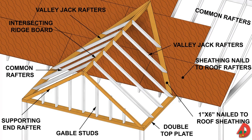Blind valley construction is a method of building intersecting roofs without valley rafters. The main roof is sheathed and the intersecting section is built on top of the sheathing. 1x6 boards are fastened to the top of the sheathing as a base for nailing the valley jacks. The valley jack rafters require a seat cut combined with a side cut where they fasten to the 1x6 board. Blind valley construction does not require valley rafters.